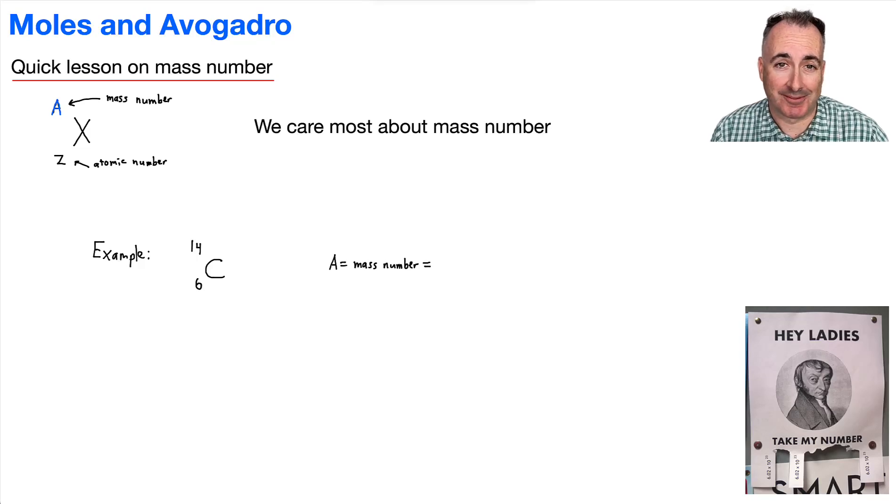Moles and Avogadro. I put this in, hey ladies, take my number. Look, it's 6.02 times 10 to the 23. That's Avogadro's number. That's cute. Okay, let's do a quick lesson on mass number.